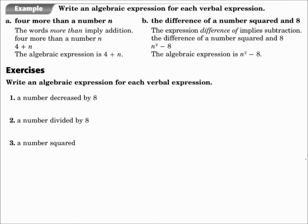Write an algebraic expression for each verbal expression. Example: '4 more than a number n.' We have the number 4, 'more than' implies addition, and we have the variable n — so the answer is n plus 4. Example b: 'the difference of a number squared and 8.' Difference is subtracting. A number squared could be n squared, and 8 is the number 8, so you get n squared minus 8.